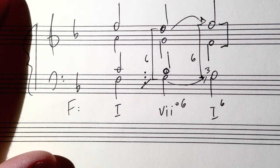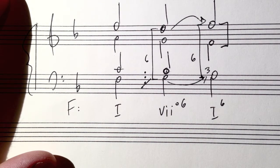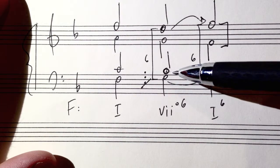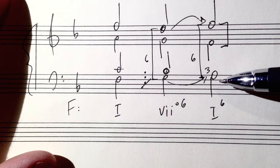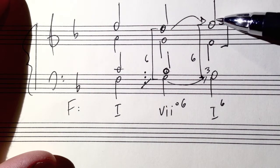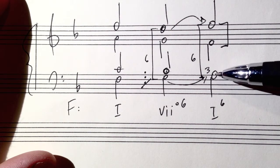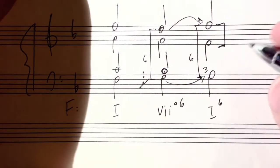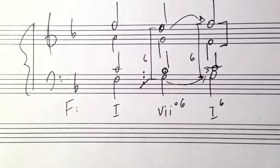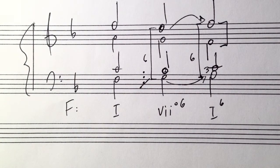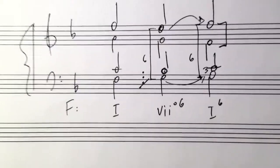Now where is the B natural in the tenor gonna go? In a one six chord you have an F, you have one F, you have an A, you need a C. A great choice would be right here, moving in parallel thirds. So good voice leading here.